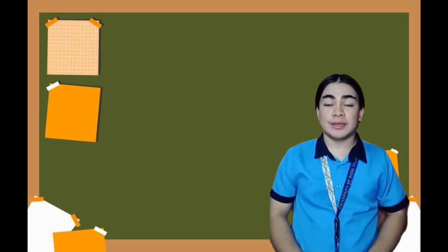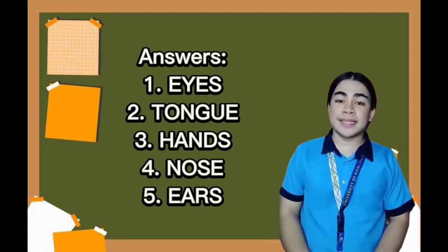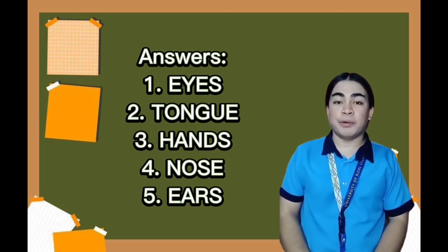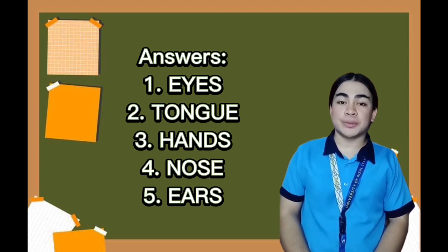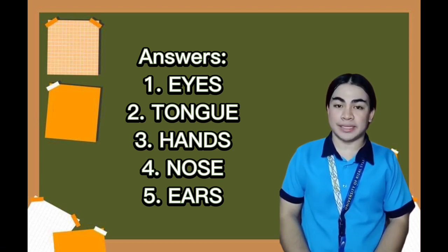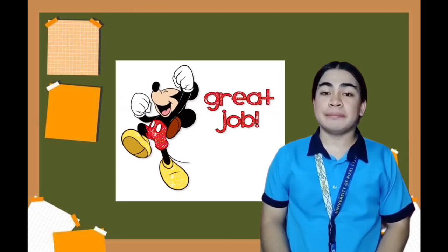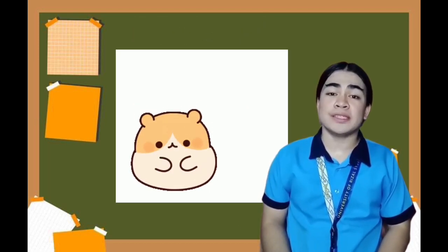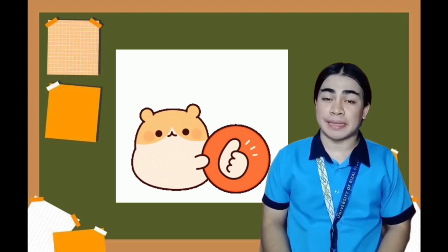Now let's check your quiz. Check your own paper and be honest, because honesty is the best policy. The answers are: number one — eyes; number two — tongue; number three — hands; number four — nose; number five — ears. If you got four to five, you understand the lesson. If you got three and below, don't worry — you can always review the video lesson. Remember, we will learn if we listen, focus, and understand.